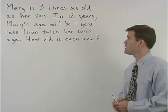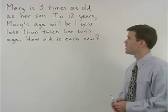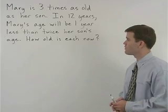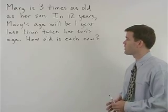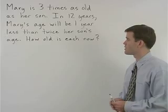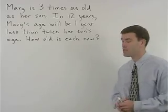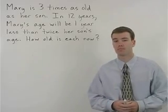Mary is three times as old as her son. In twelve years, Mary's age will be one year less than twice her son's age. How old is each now?